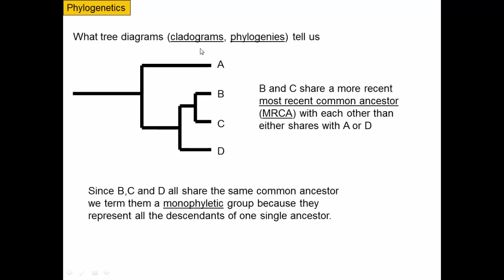What do these tree diagrams — also called cladograms or phylogenies — tell us? If this is the history of taxa A, B, C, and D, then B and C share a more recent common ancestor with each other than either shares with A or D. Going back in time, this organism is the most recent common ancestor of B and C. Going further back gives you a common ancestor of B and C but not the most recent one. You'd have to go further back to find the most recent common ancestor of B, C, and D, and all the way back to find the MRCA — most recent common ancestor — of all four taxa.